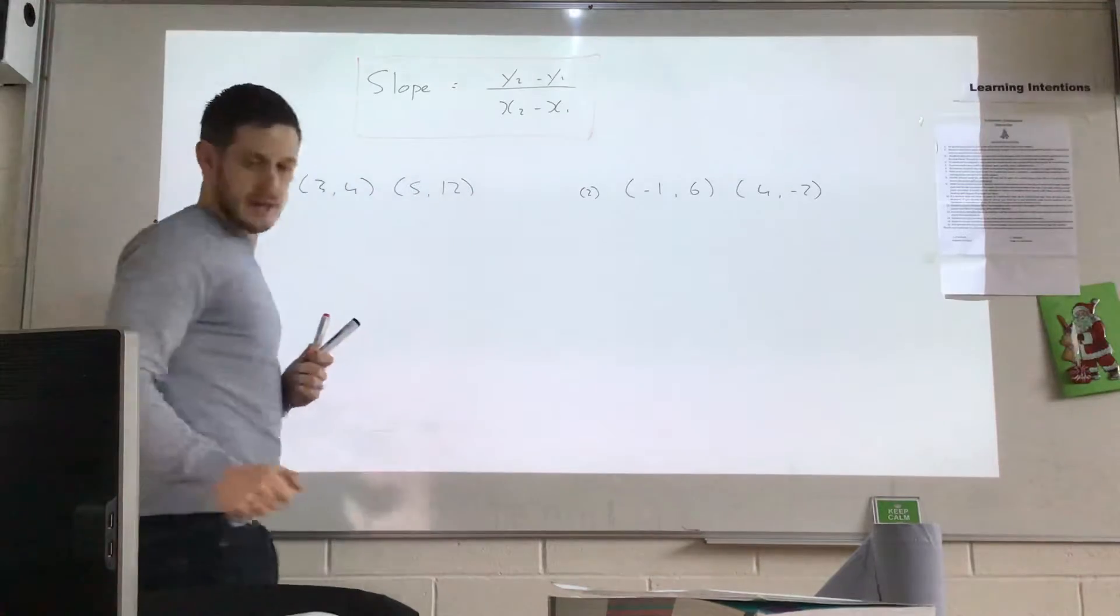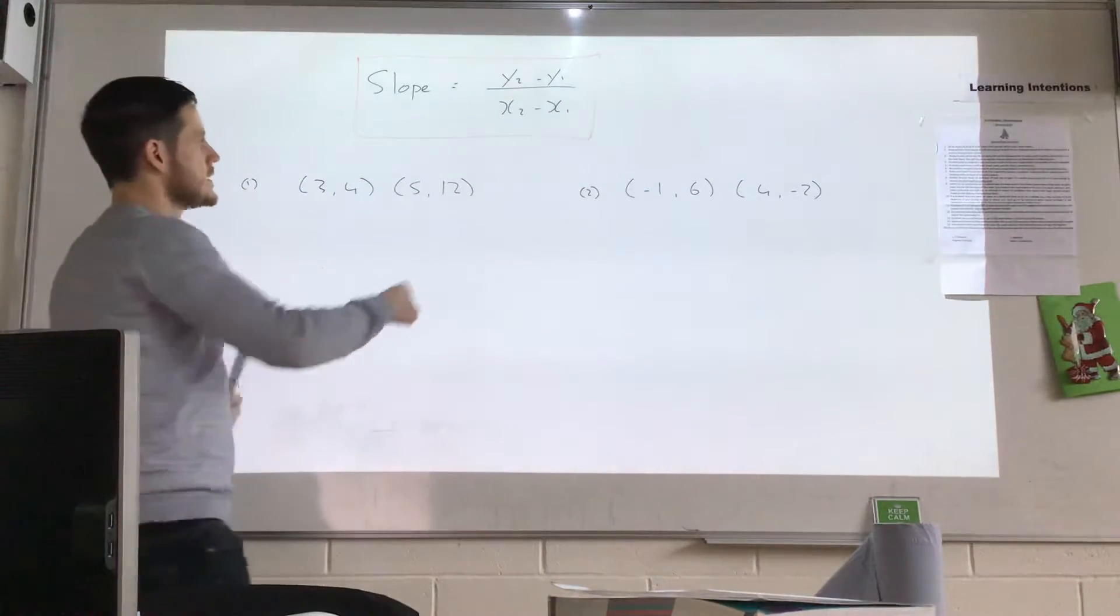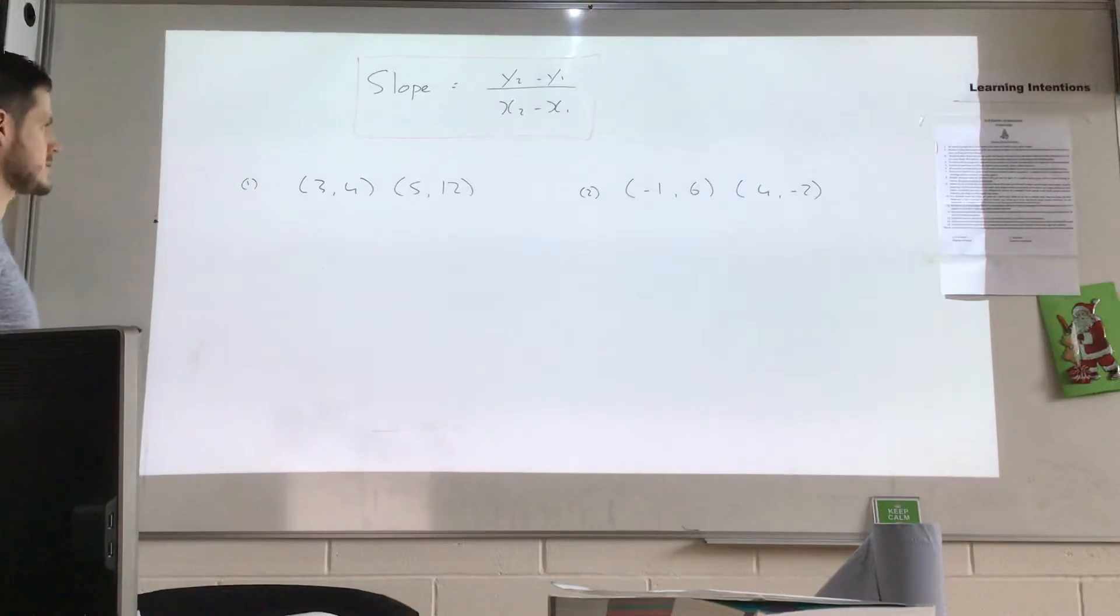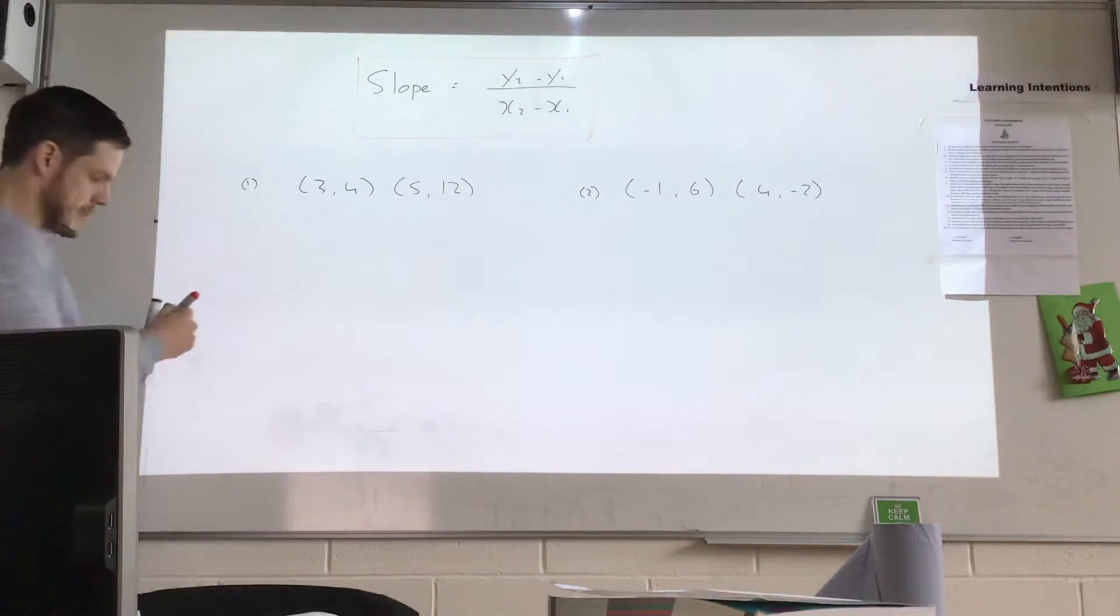A little formula for the slope. Looks complicated, but it's not actually that bad. It says y2 minus y1 over x2 minus x1. So what we have here is we've got two points for question one. So I'm going to label them.